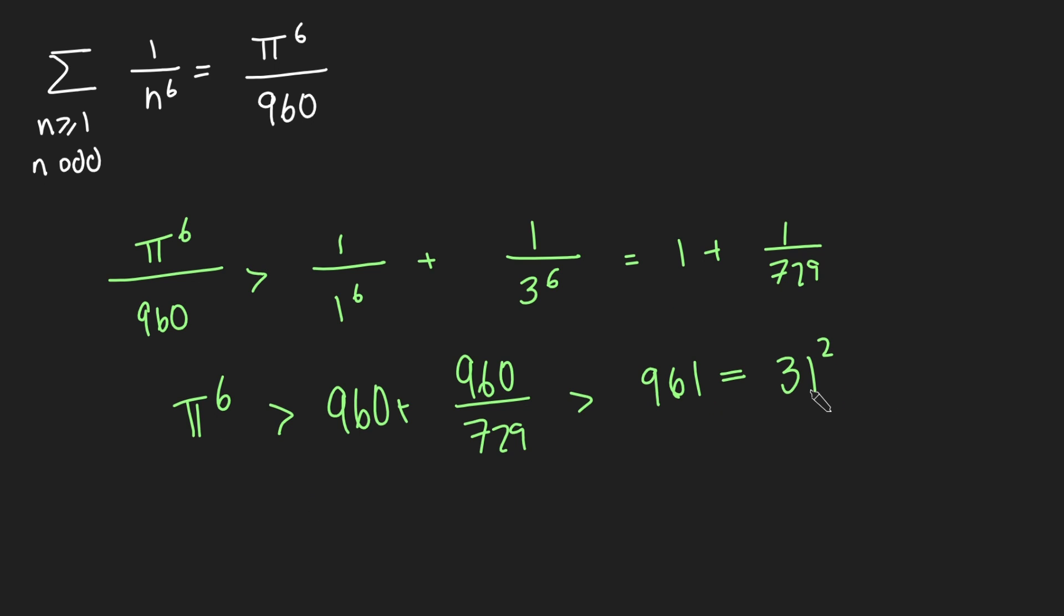And we get pi to the 6 is bigger than 961 but 961 is just 31 squared. And we get pi to the 6 is bigger than 31 squared. And so just taking the 6th root on both sides we get that pi is bigger than 31 to the 1/3 which is just the cube root of 31. And that proves that pi is bigger than the cube root of 31.